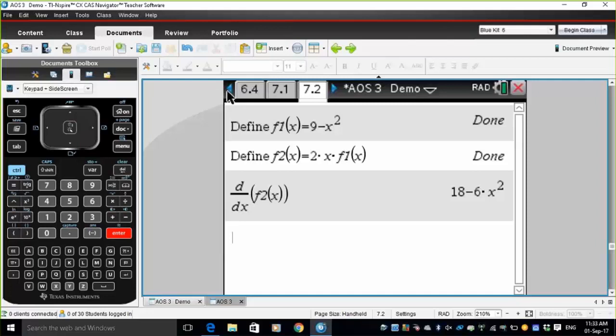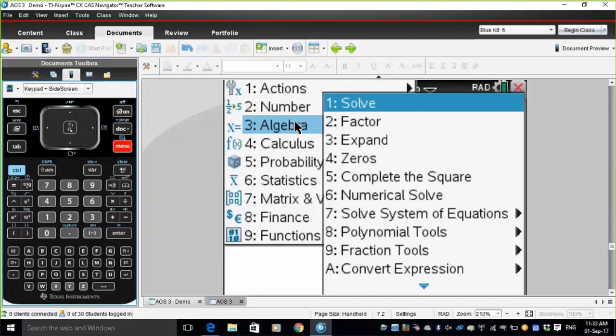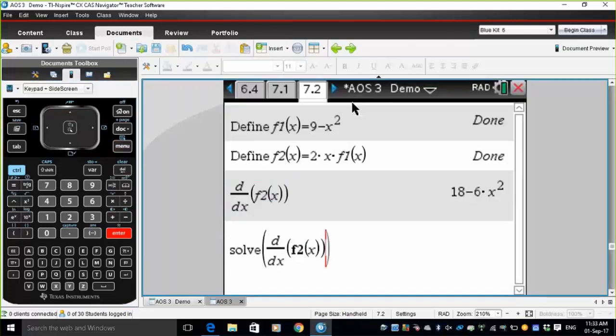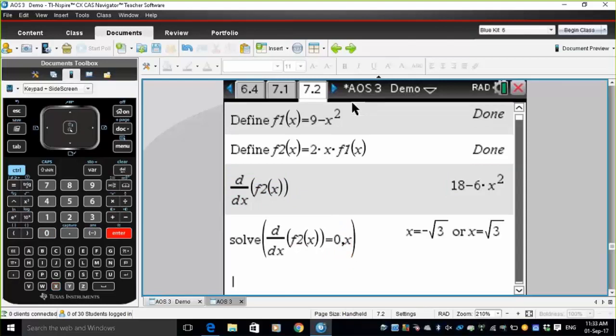To find where that's equal to zero, we'll go menu, algebra, solve, where the gradient function is equal to zero for x. Now, that gives me two answers there,